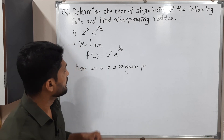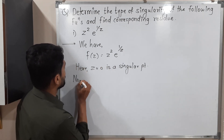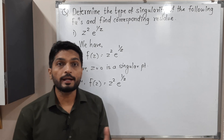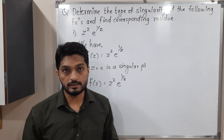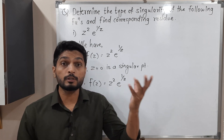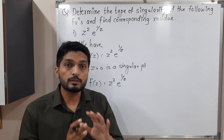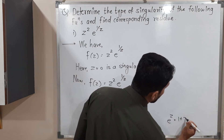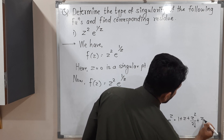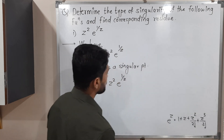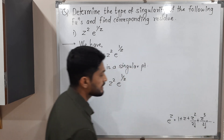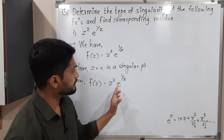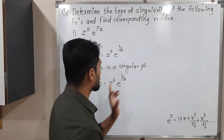Let me write f(z) = z² · e^(1/z) and find the Laurent series expansion. We use the standard expansion of e^z, which is 1 + z + z²/2! + z³/3! + ... and so on. Since we have e^(1/z), we replace z with 1/z in this expansion.